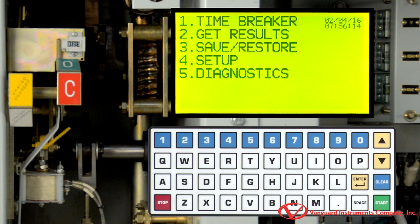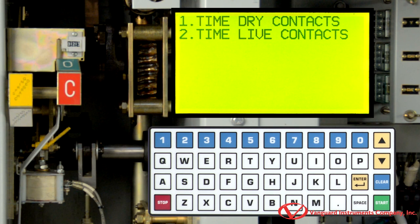To start performing a conventional timing test, we will select time breaker by pressing the 1 key. Now, we will press the 1 key to select time dry contacts.